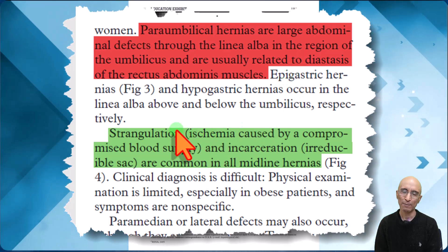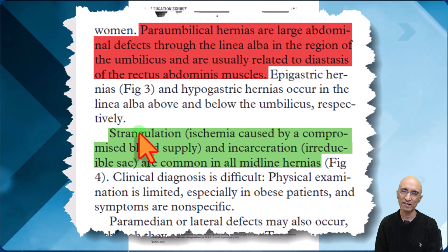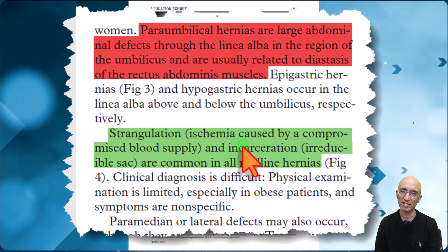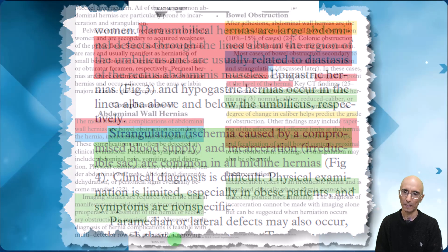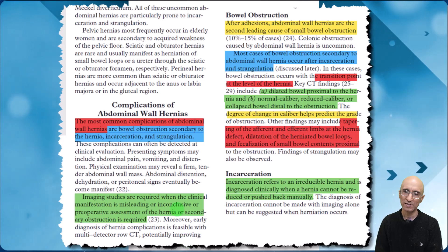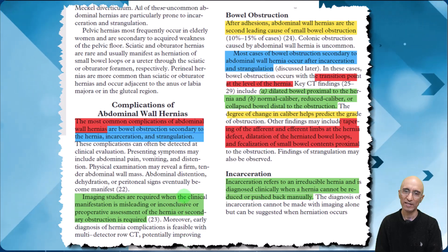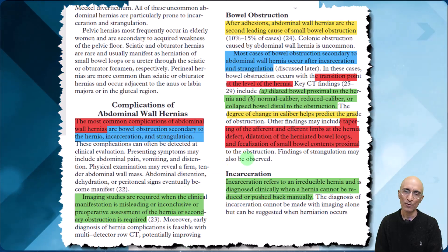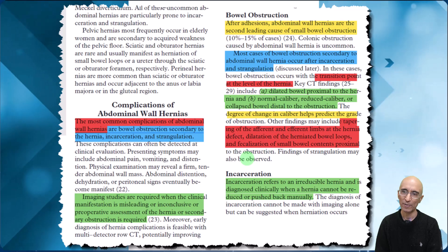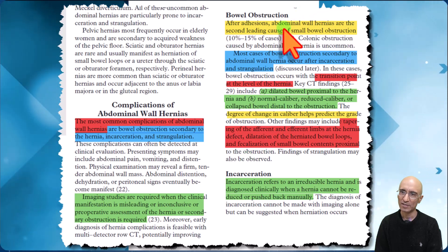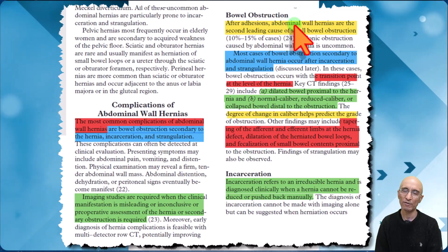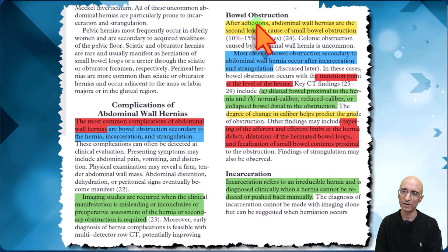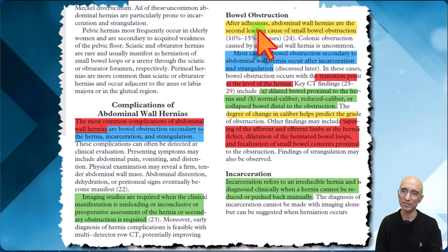With regards to complications from ventral hernias, they can lead to strangulation or incarceration. Imaging studies are required when the clinical manifestations are misleading or inconclusive, or for pre-operative planning. Bowel obstruction is one of the most common reasons for presentation after adhesions related to prior surgery.